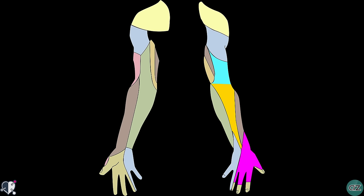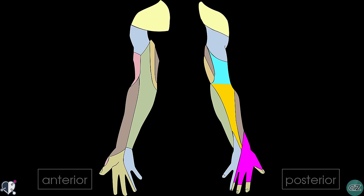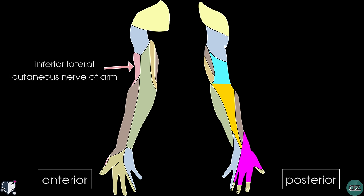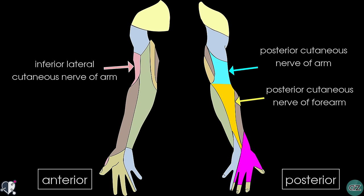Switching to a diagram to illustrate the sensory distribution of the various branches of the radial nerve — there are four branches in total which provide sensory innervation. On the left hand side, showing an anterior view of the arm, the red shading shows the area of innervation supplied by the inferior lateral cutaneous nerve of the arm. On the right hand side, the blue area shows the area supplied by the posterior cutaneous nerve of the arm. The yellow shaded area is supplied by the posterior cutaneous nerve of the forearm, and the purple area is supplied by the superficial branch.